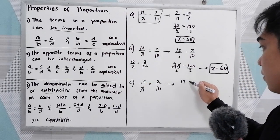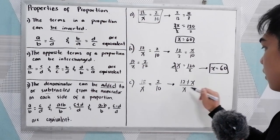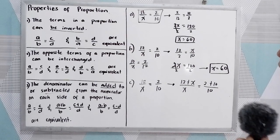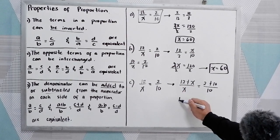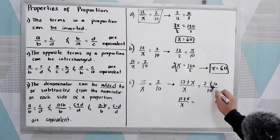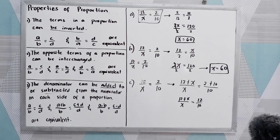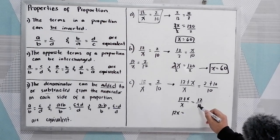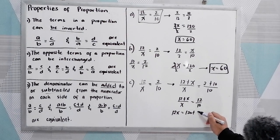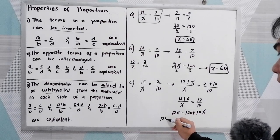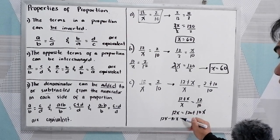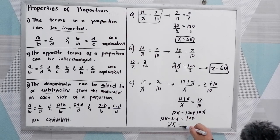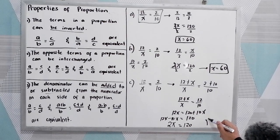Using the same given 12 over X equals 2 over 10, applying property three: 12 plus X over X equals 2 plus 10 over 10, which simplifies to 12 plus X over X equals 12 over 10. Cross-multiplying: 12X equals 120 plus 10X. Moving 10X to the left: 12X minus 10X equals 2X equals 120. Dividing by 2, X equals 60.